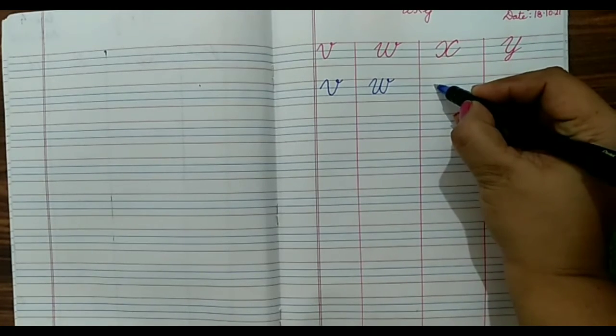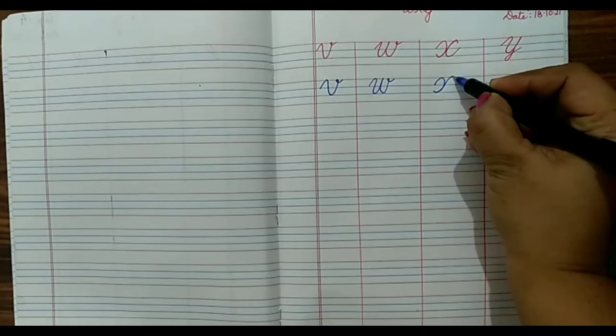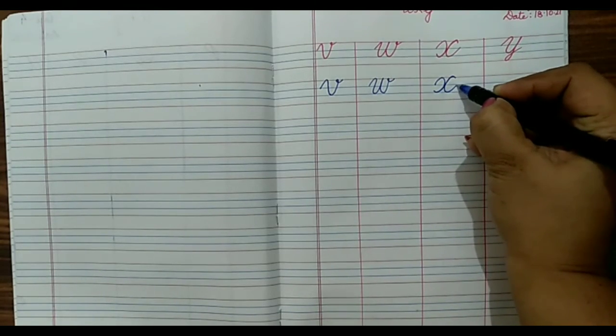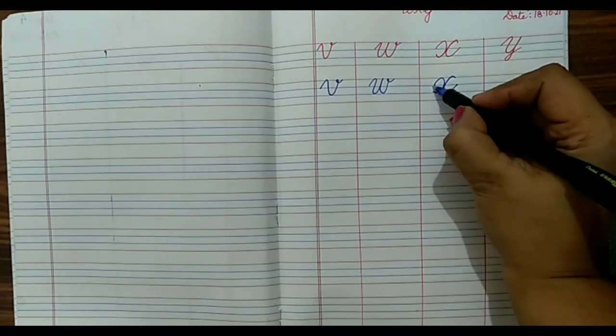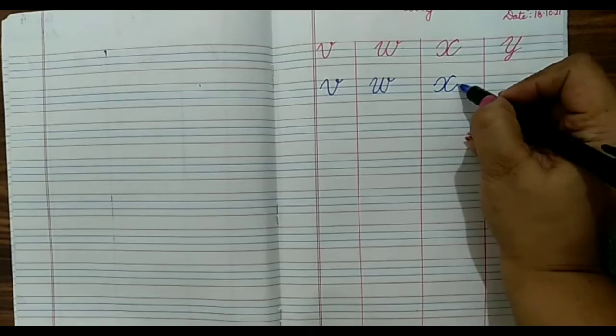For X, we will make a reverse C then a forward C and touch at the blue line. It will start from the first blue line and end up at the first blue line.